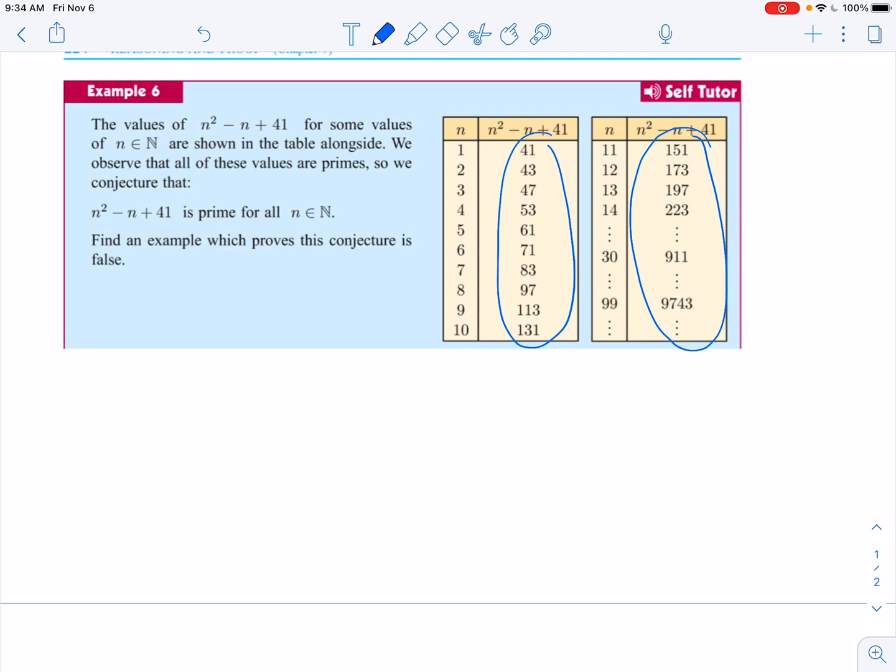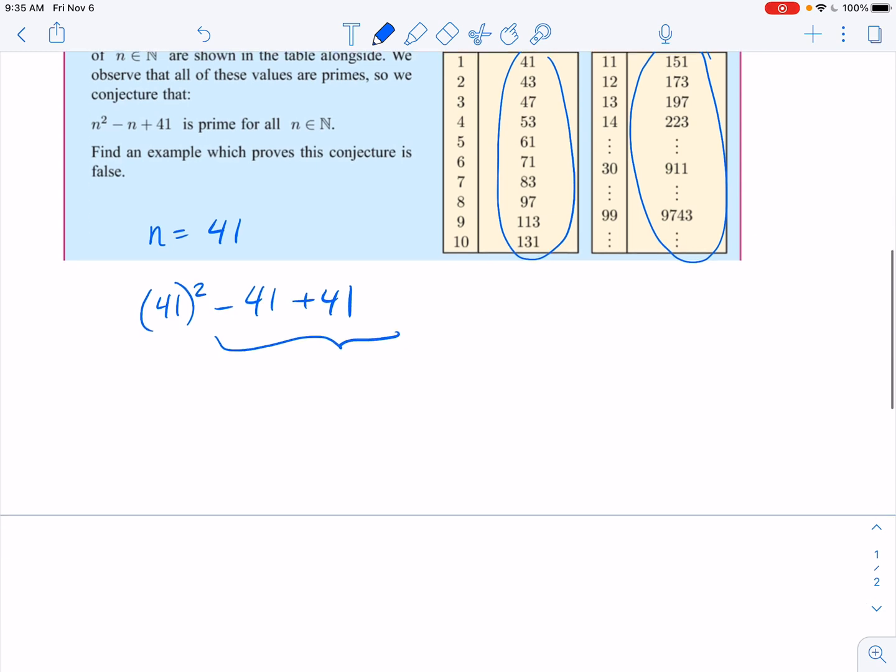So check this out. What happens when we let n equal 41? When I have n equals 41, I've got 41 squared minus 41 plus 41. Notice these 41s right here are going to cancel out, and so then I just have 41 squared. I don't even care what that value is. I know that since it's multiplying by itself, it's not prime.